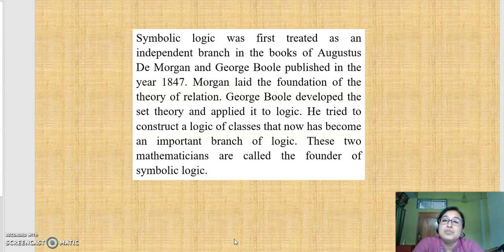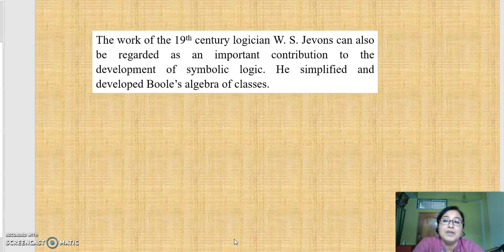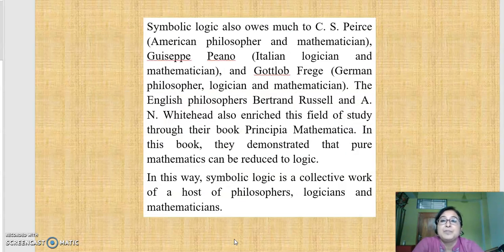The work of 19th century logician W.S. Jevons can also be regarded as an important contribution to the development of symbolic logic. He simplified and developed Boole's algebra of classes.